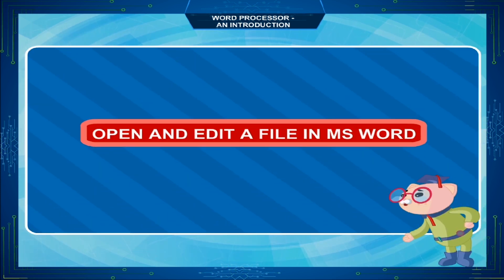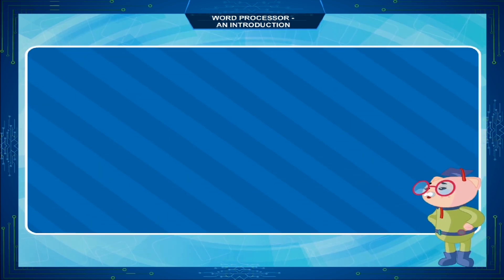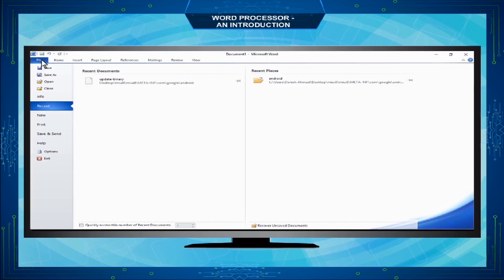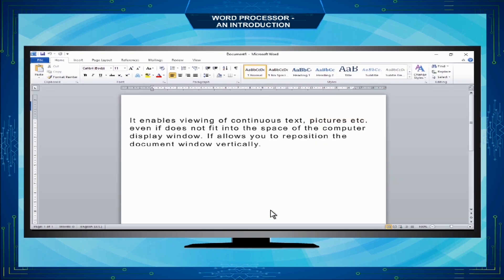To open and edit a file in MS Word: on the MS Word window, click the File tab then Open. Select the file name and press the Open button. Now you can edit the document and save it again by clicking the File tab.